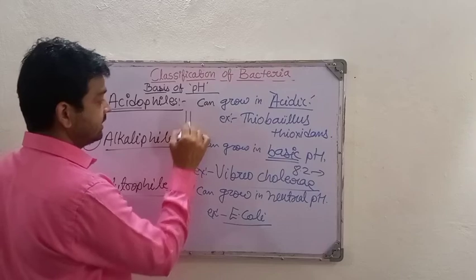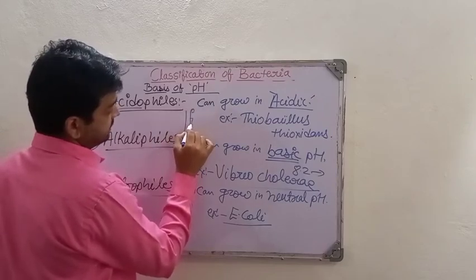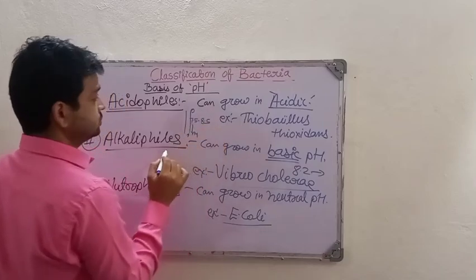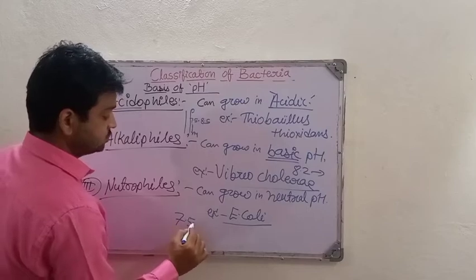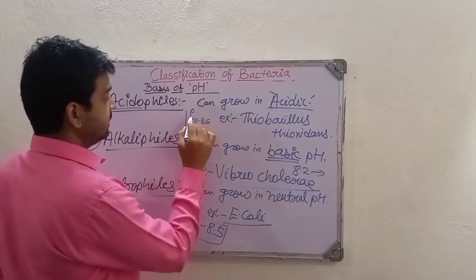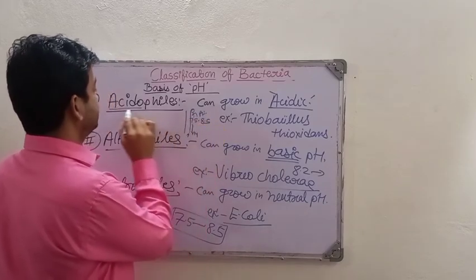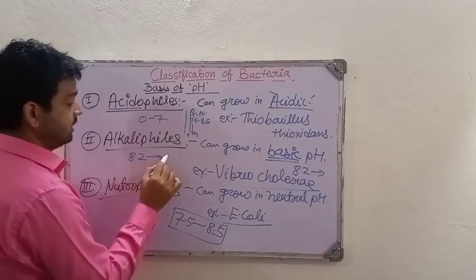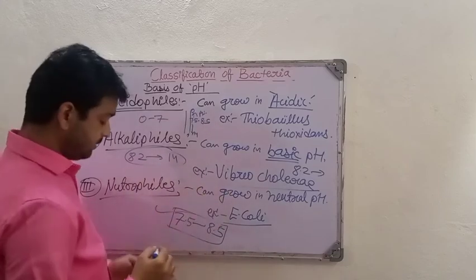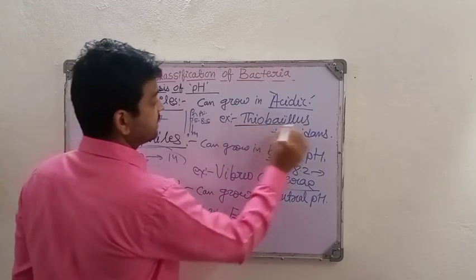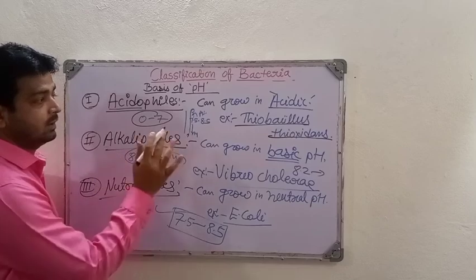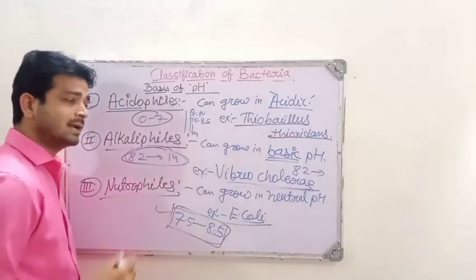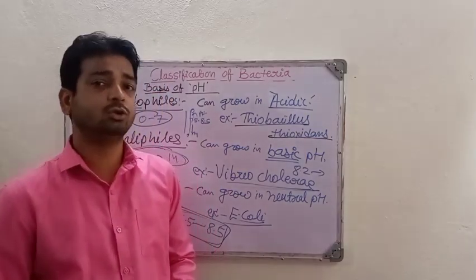Here you can see the pH scale from 0 to 14. The neutral range is 7.5 to 8.5. Below this, it is acidic, so acidophiles fall under pH 0 to 7. Alkaline is 8.2 onwards up to 14. For example, Thiobacillus thiooxidans grows in the acidic range, Vibrio cholerae grows at pH 8.2 and above, and E. coli requires neutral pH, which is why it is found in the healthy human intestine. Thank you.